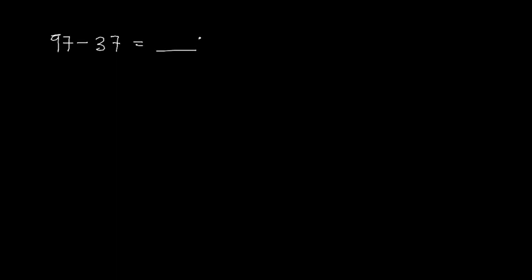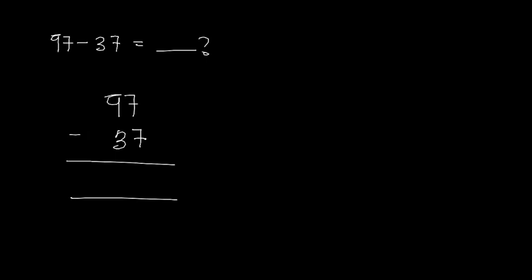Let's look at more examples. We have 97 minus 37. Subtracting the ones first: 7 minus 7 gives us 0, because if you have 7 apples and give 7 away you're left with none. Now 9 minus 3: you have 9 apples, give 3 away, left with 6. So 97 minus 37 gives us 60.